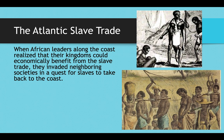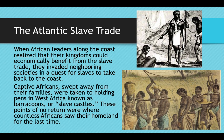When African leaders along the coast realized they could economically benefit, they would invade neighboring societies to bring slaves back to the coast and wait for European ships. Captive Africans were swept away from their families and taken into holding pens on the West African coast known as barracoons or slave castles — points of no return where countless Africans saw their homeland for the last time. They would be in these pens for weeks at a time, and when a European ship came into port, the traders would haggle about a price — so many barrels of rum or firearms for so many African slaves — and then the enslaved people would be brought onto the boat.